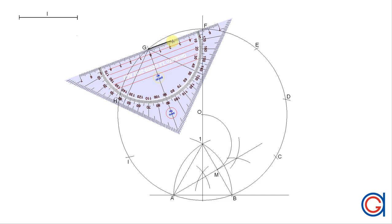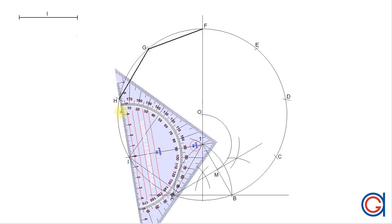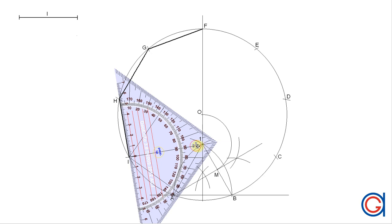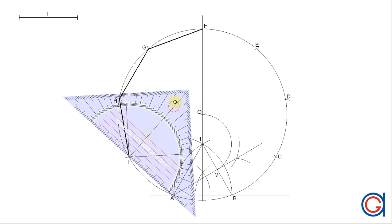And our final step is to join the vertices of our nonagon. F to G, G to H, H to I. We do this using a darker colored HB pencil. We continue joining the vertices, I back to A.